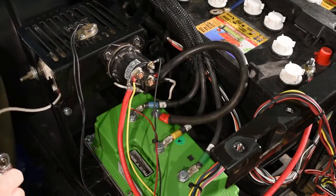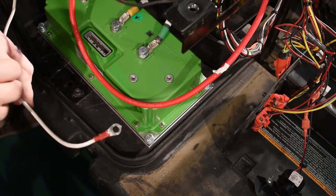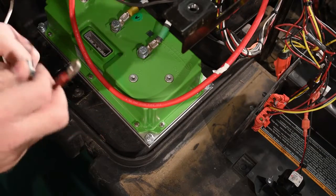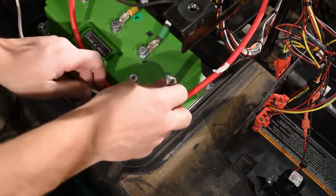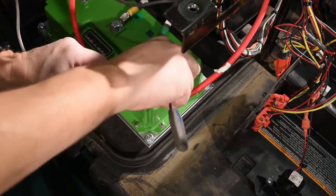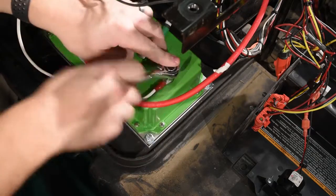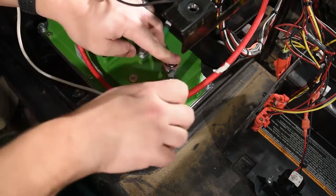Add the red wire from the resistor and run it over to the resistor output of the controller. This uses a 10mm socket or wrench.